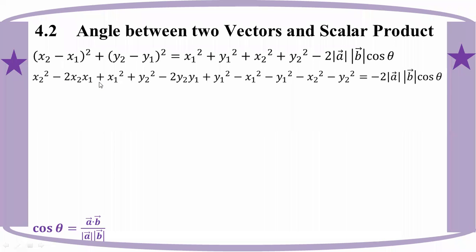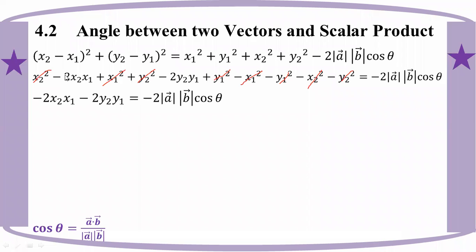We build h2 squared minus 2h2 plus h1 squared. So we have: minus 2, H1, minus 2, Y1, minus 2, Y1. Modular 1, modular 1, cos.